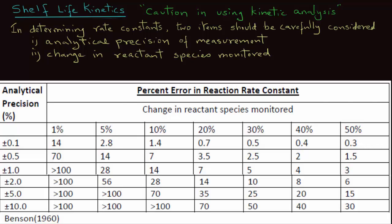Another way to look at this is that for the same analytical precision, let's say plus minus 2, if you follow the change in the reactant species up to 5%, the error will be 56% in predicting rate constant. But that error will decrease to 6% if you followed the reactant species up to 50% change, as we see in this table.